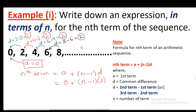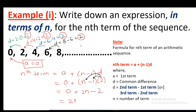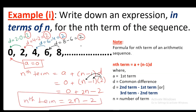The common difference is 2. We expand the bracket by multiplying 2 with N and 2 with 1, so we get 0 plus 2N minus 2. The final answer will be 2N minus 2. This is the Nth term of the sequence of even numbers.